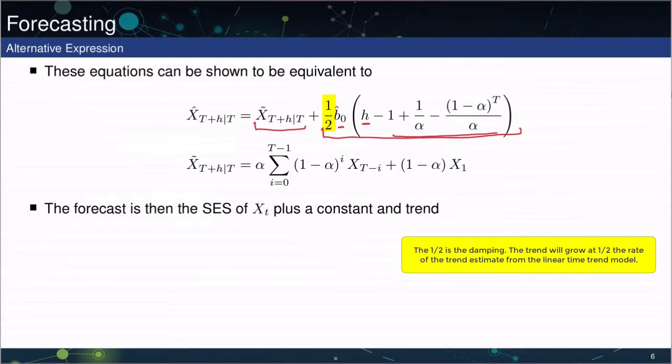And in particular, if we think of the alpha, which is the SES parameter, that is the parameter comes from a simple exponential smoothing, if that parameter is somewhere between 0 and 1, then we can see that this damping is going to reduce the effect of the trend relative to having an alpha say that was equal to 1. If alpha is 1, then most of this term cancels, and you're just left with h.